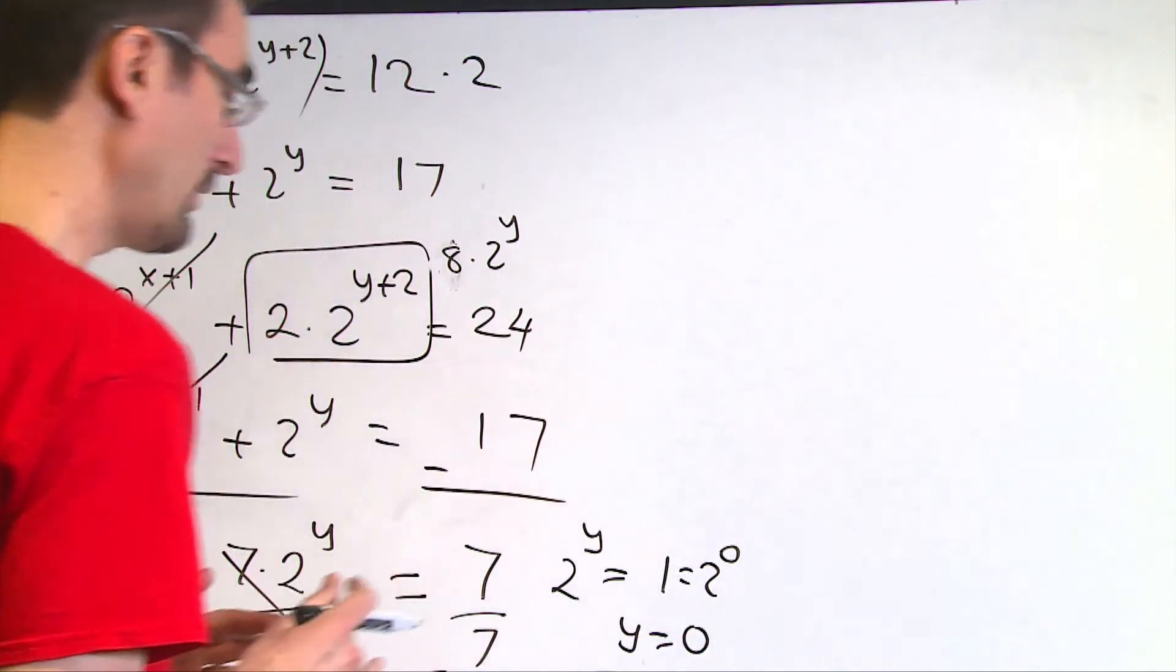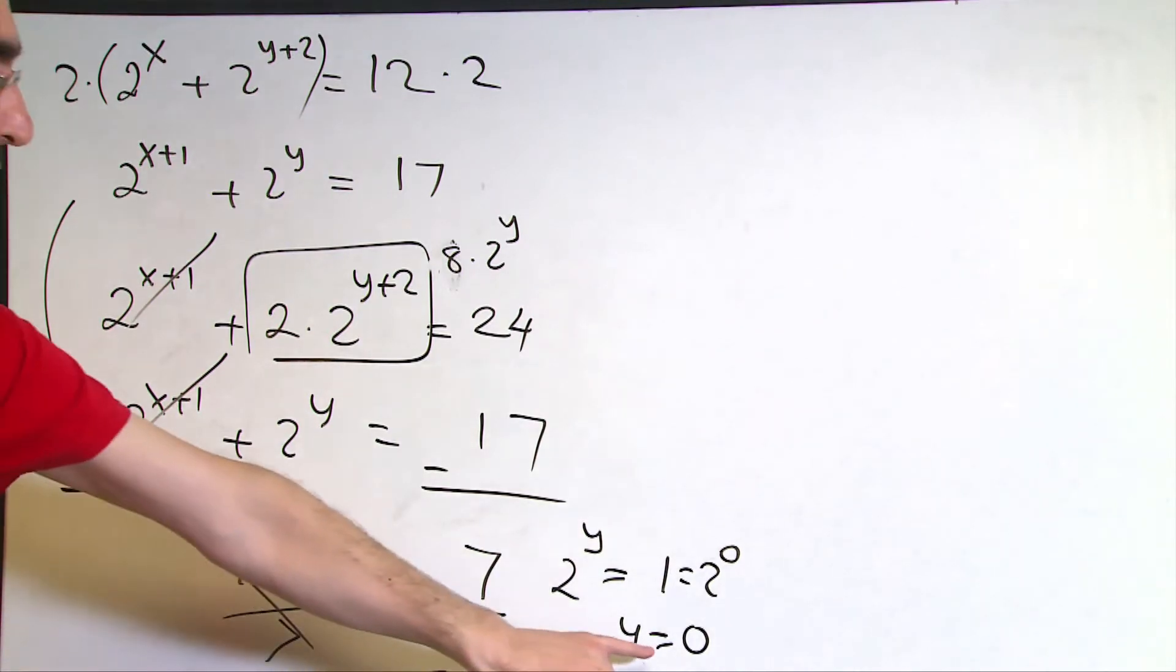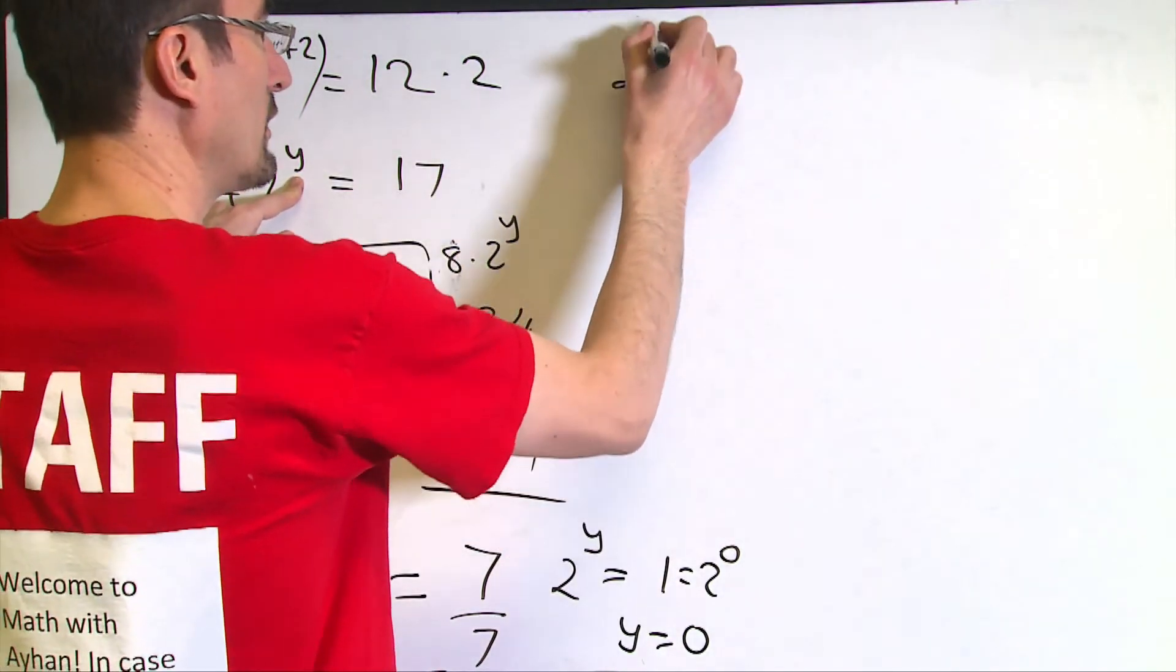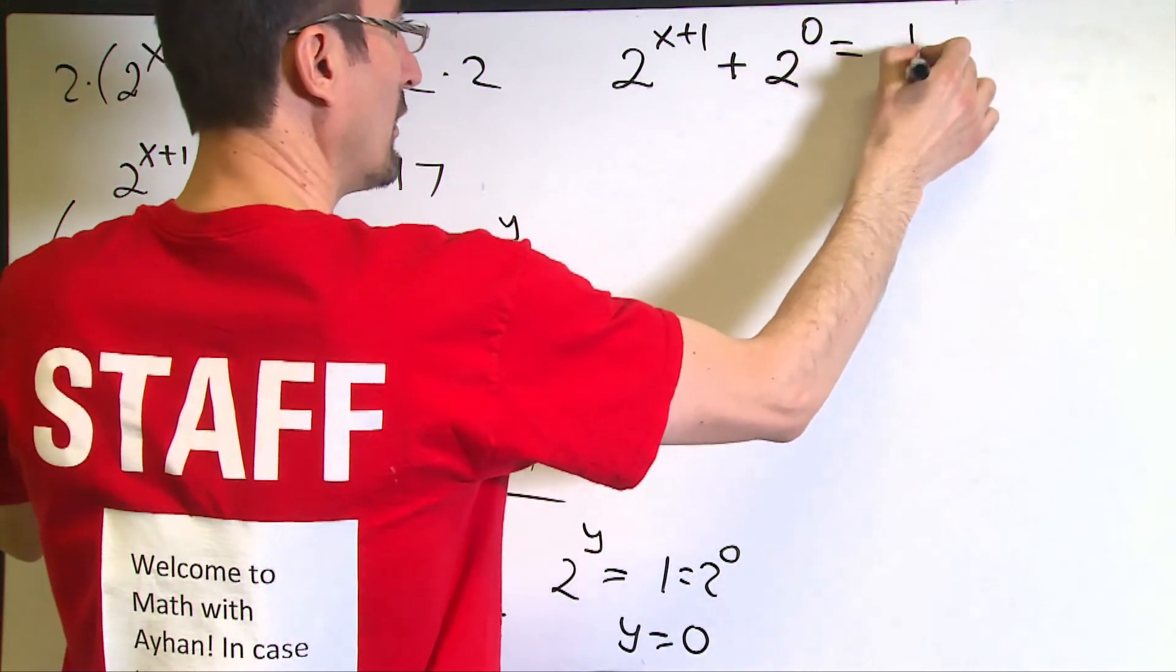Am I done? No, there is one more step. I need to go back and solve this equation for x, substituting y equals 0. Then I replace this y equal to 0 in the second equation. That will give me 2 to the power x plus 1 plus 2 to the power 0 equals 17.